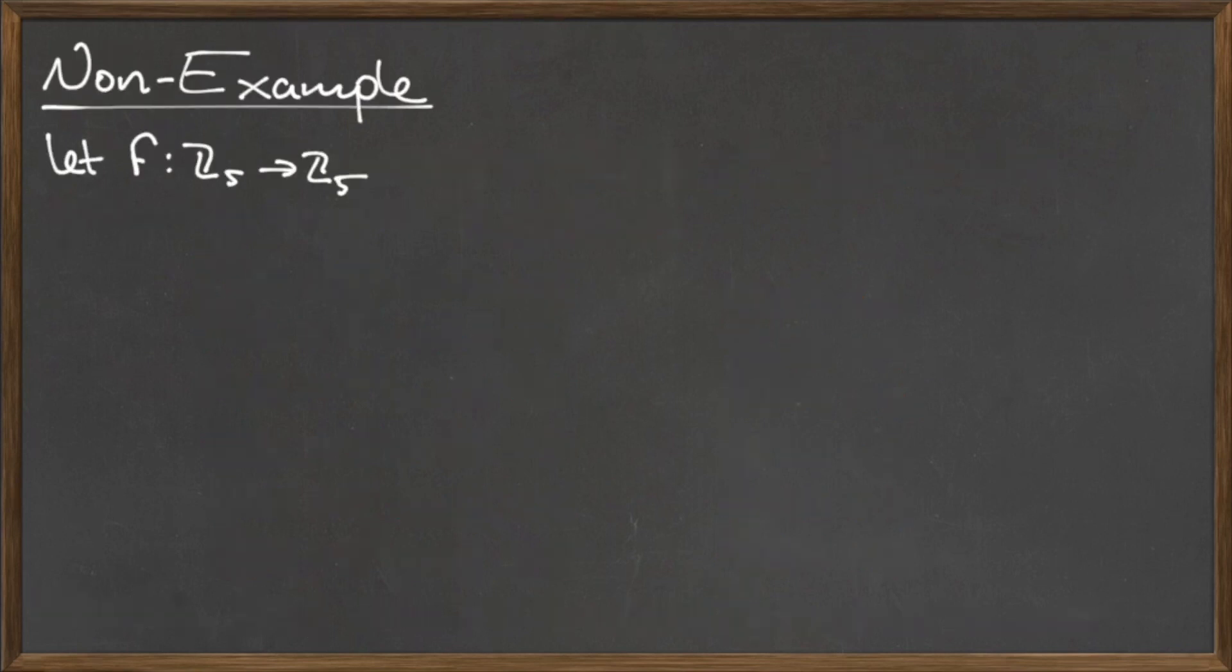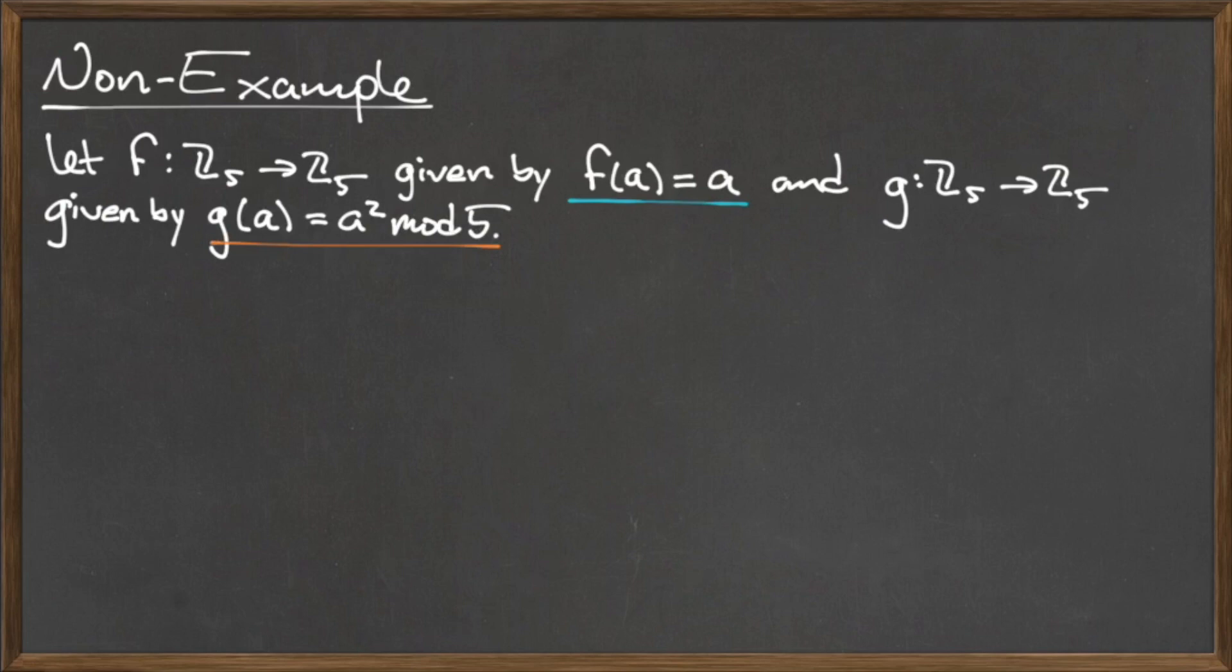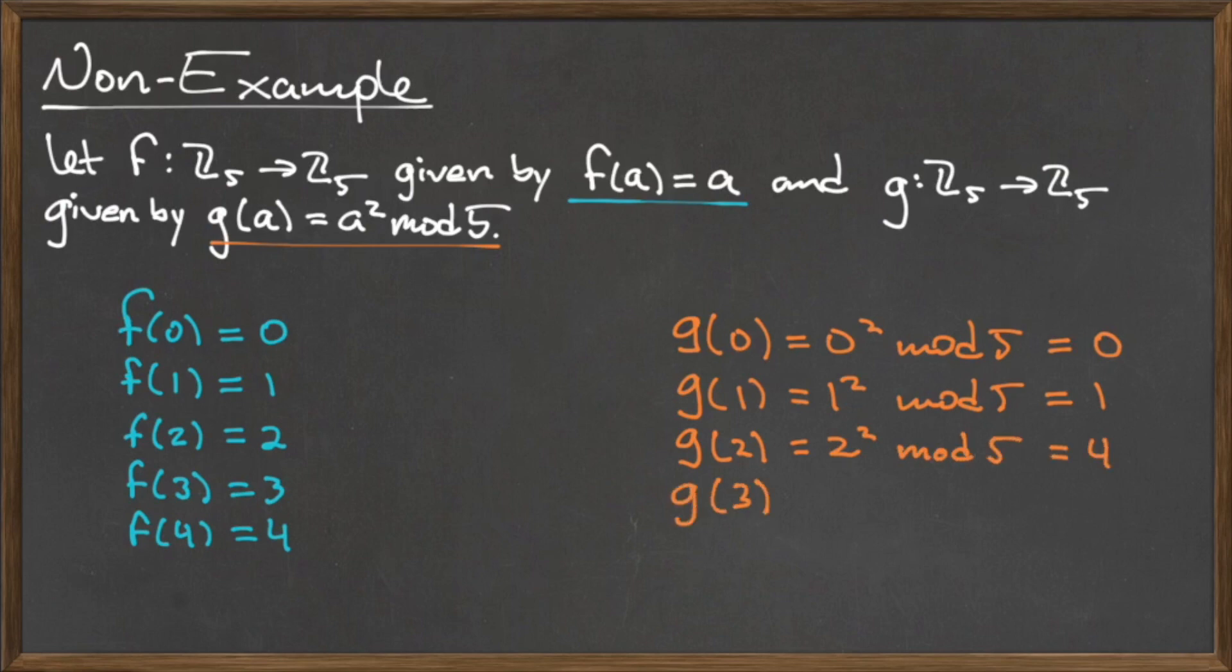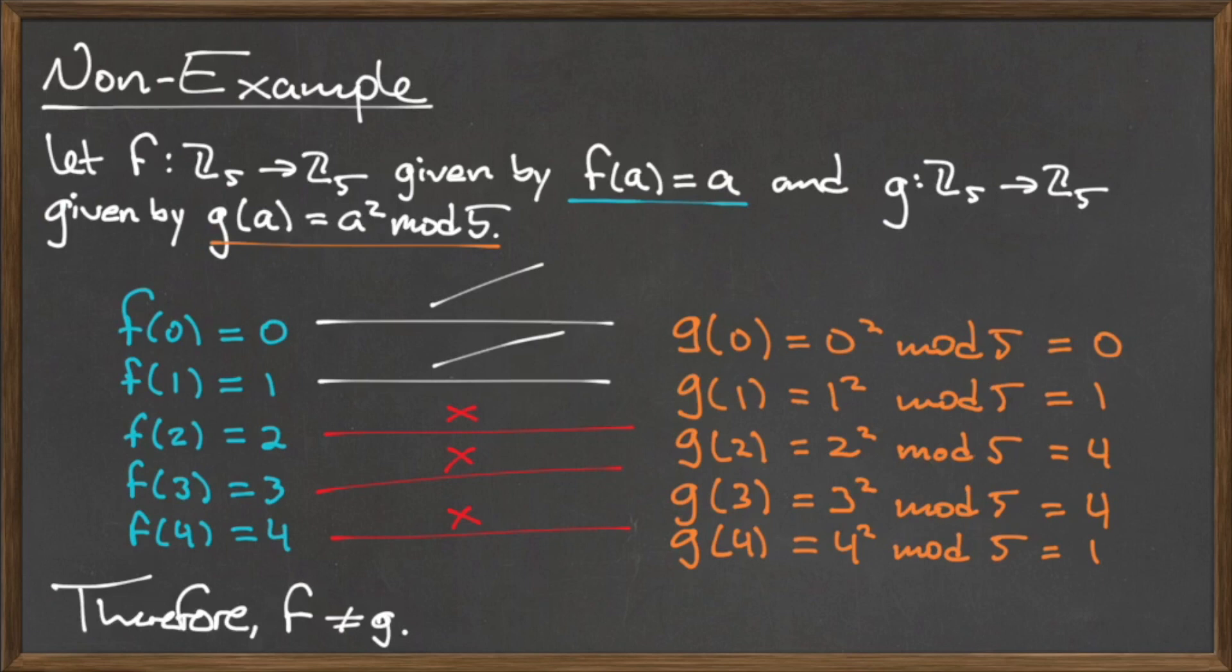Now, we'll show an example of two functions that are not equal. Let f: Z₅ → Z₅ be given by f(a) = a, and g: Z₅ → Z₅ be given by g(a) = a² mod 5. Remember that for two functions to be equal, their output values must be the same for all input values in the domain, not just a few.